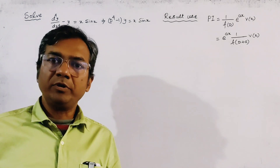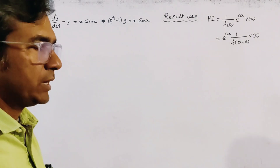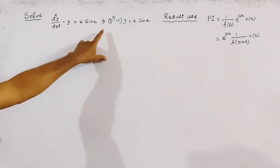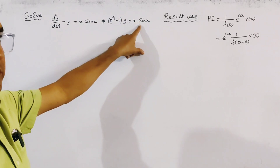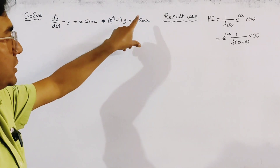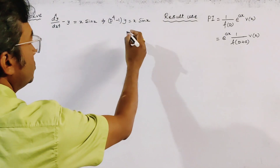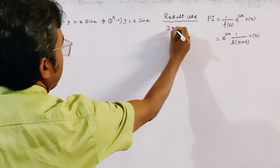Today's problem is from ordinary differential equations. It is a linear ordinary differential equation with constant coefficients, but it is non-homogeneous since the right-hand side is non-zero. We know that the general solution of this type of equation has two parts.